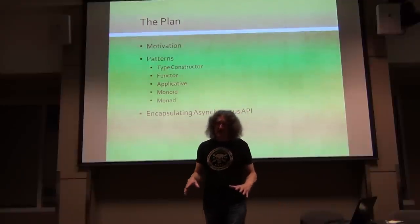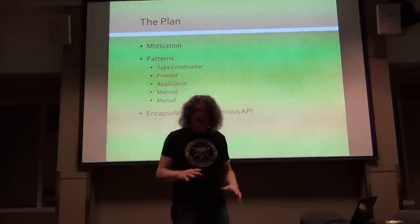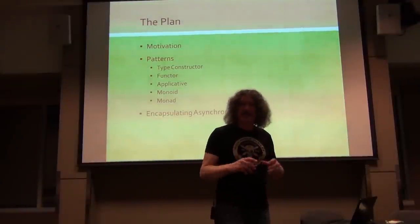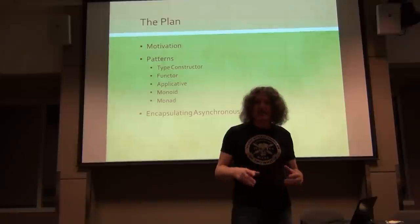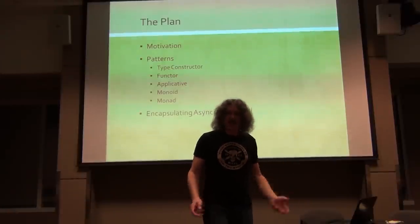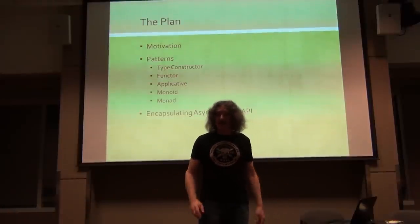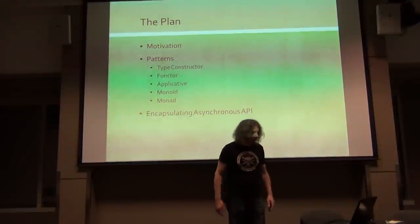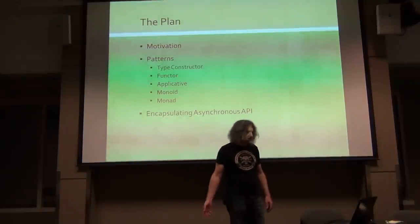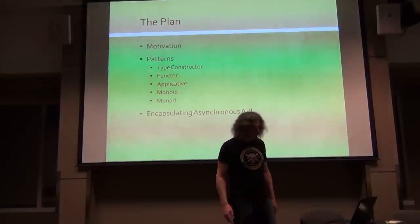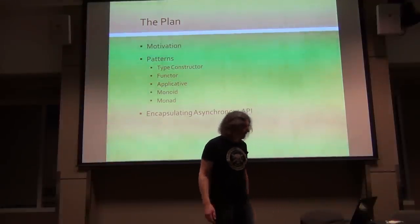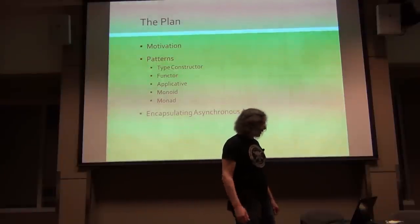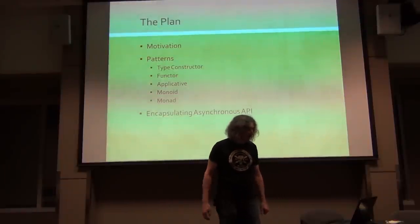I will show you them in C++ mostly. I'll have a few digressions into Haskell because Haskell has a very nice terse way of expressing things that in C++ I would just have to do a lot of hand wave. I'm just going to pull back on Haskell for a moment to explain certain things like curry names. So this is the list of the patterns: Type constructor, Functor, Applicative, Monoid and Monad.